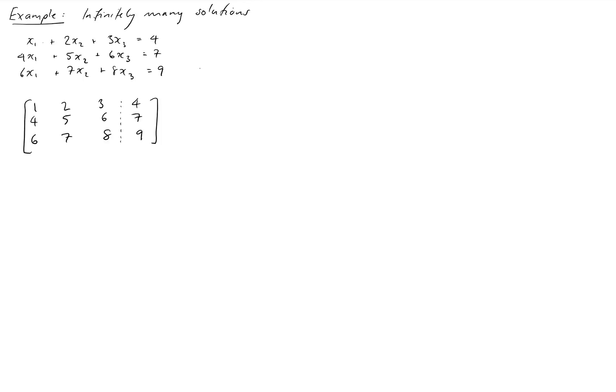Okay now we're going to apply our Gaussian elimination. So I'm going to use the 1 to eliminate the 4 and the 6 underneath it. So my row operations will be row 2 becomes row 2 minus 4 row 1, and row 3 becomes row 3 minus 6 row 1.